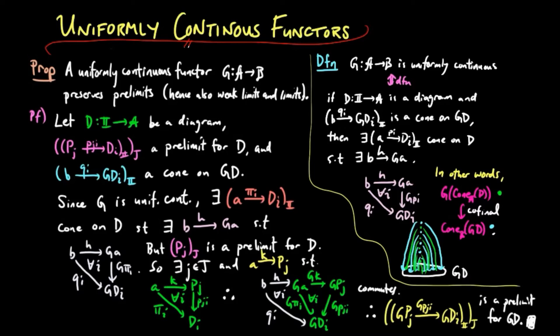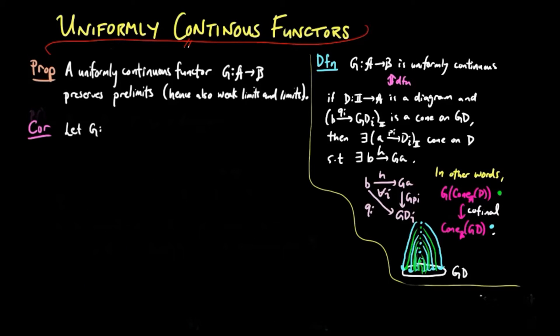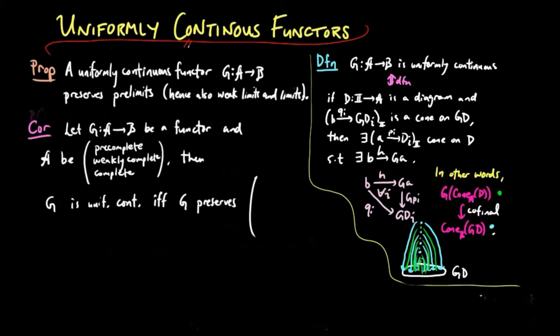This completes the proof. As a corollary, we have let G be a functor and A be a category which is complete, respectively weakly complete, respectively pre-complete. Then G is uniformly continuous if and only if G preserves pre-limits, respectively weak limits, respectively limits.